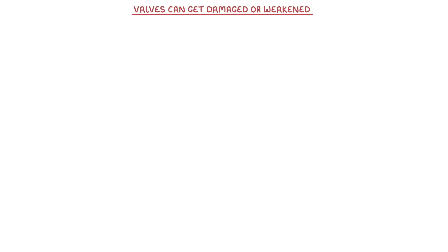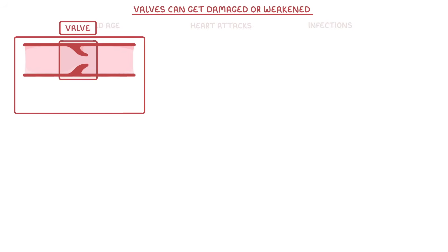Another thing that can go wrong with the heart is that the valves can get damaged or weakened, either naturally over time such as in old age, or due to other things like heart attacks and infections. The role of a valve, if you remember, is to allow blood to flow in one direction only.